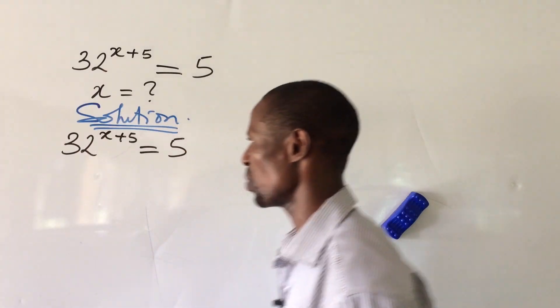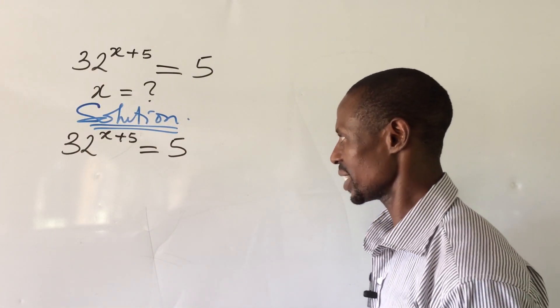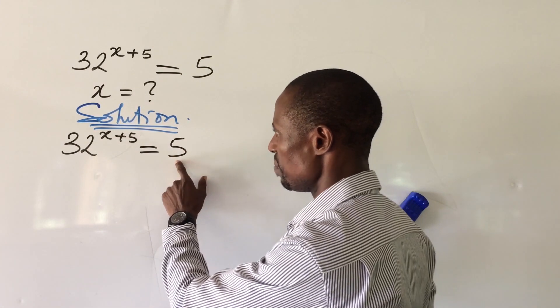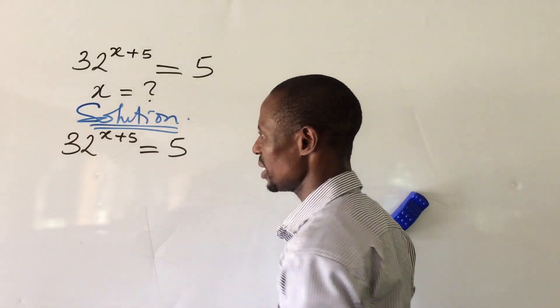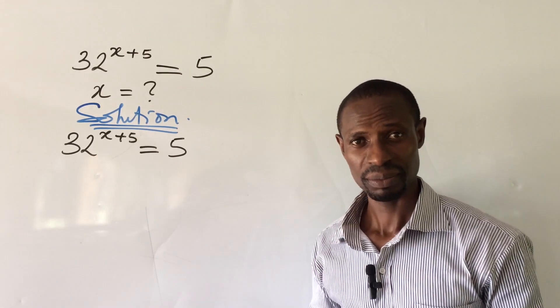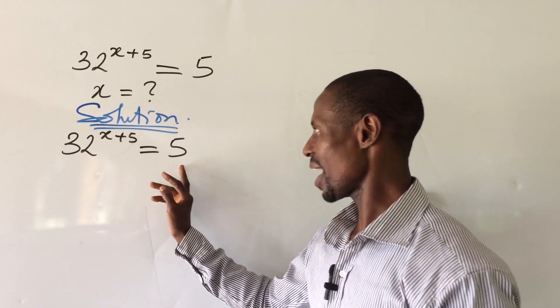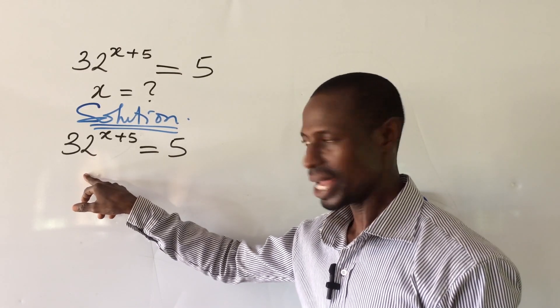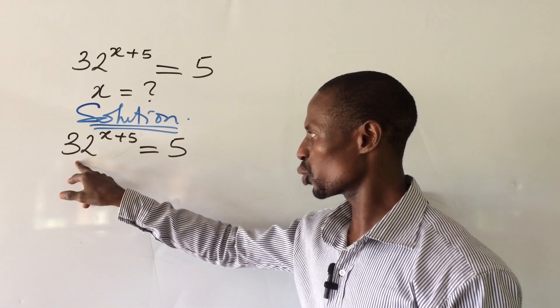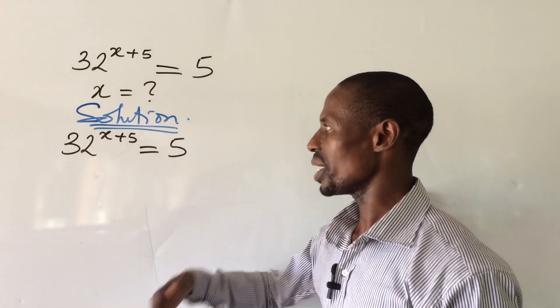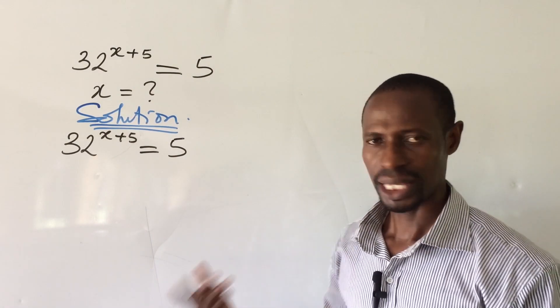This is an exponential equation. So what comes to mind first is, this is base 5. So if I decide to put 5 here, can I raise it to any number to give me 32? No. There's no number you can raise 5 to as a base here to give you 32. So I think of something else. What if I decide to put 2 here? Can I raise it to a number to give me 32? Yes.